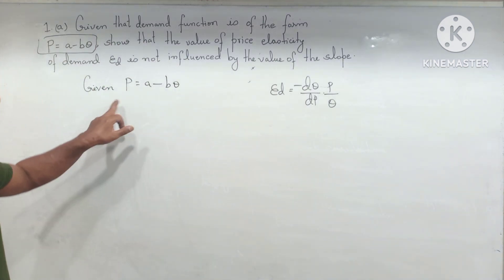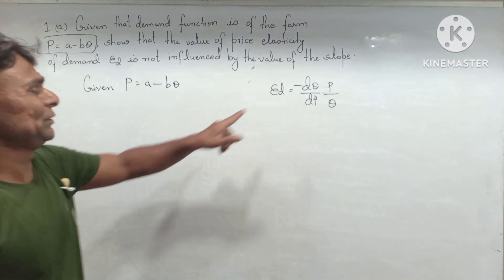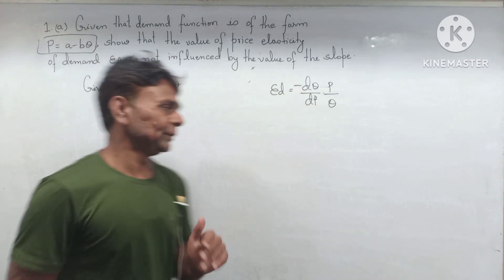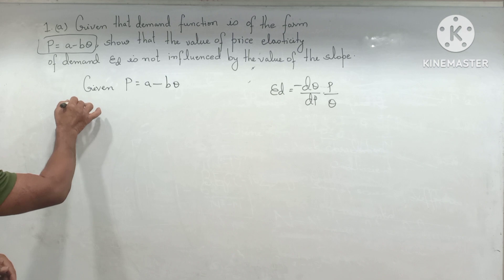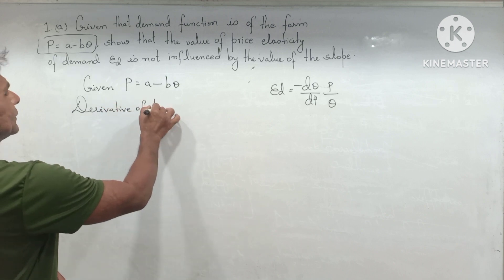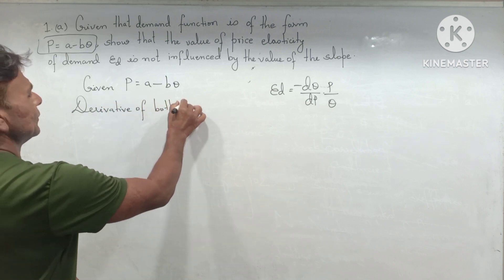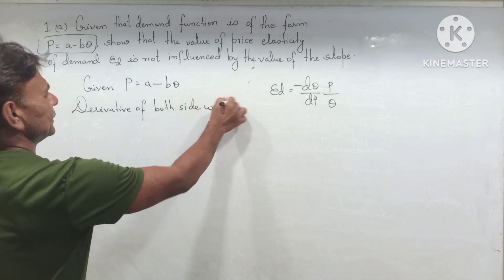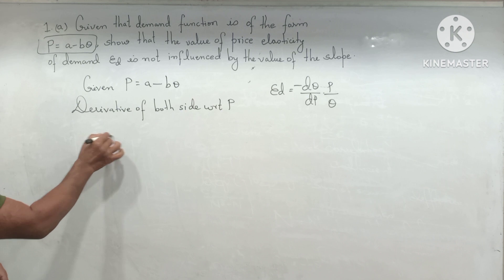But P is the function of Q, and we need to calculate the derivative of Q with respect to P. In this situation, we need to take the derivative of both sides with respect to P.